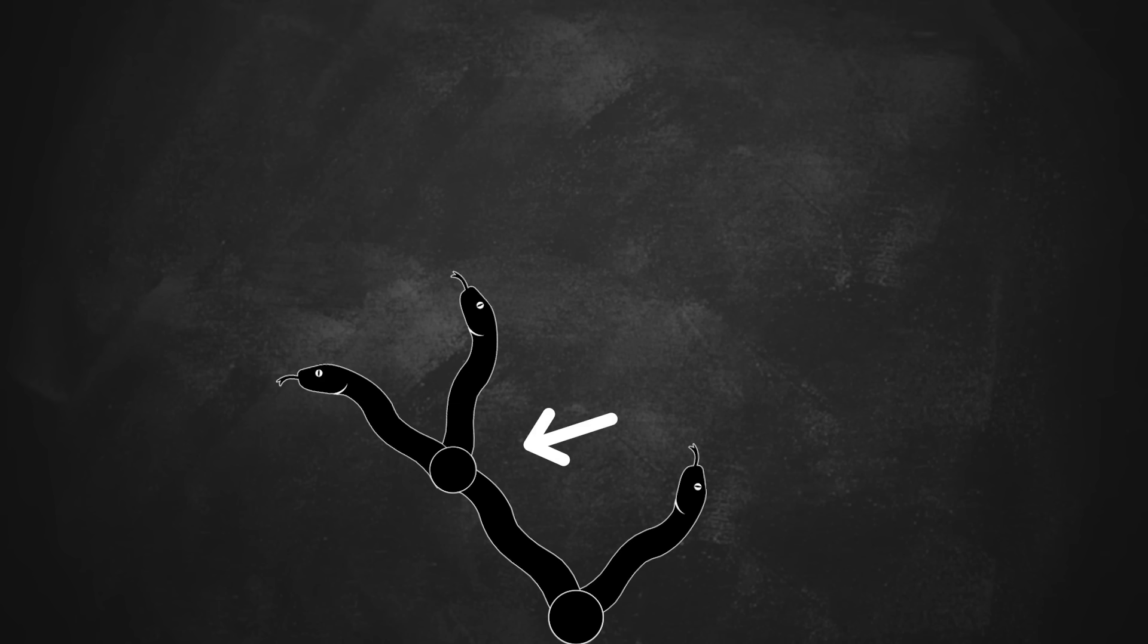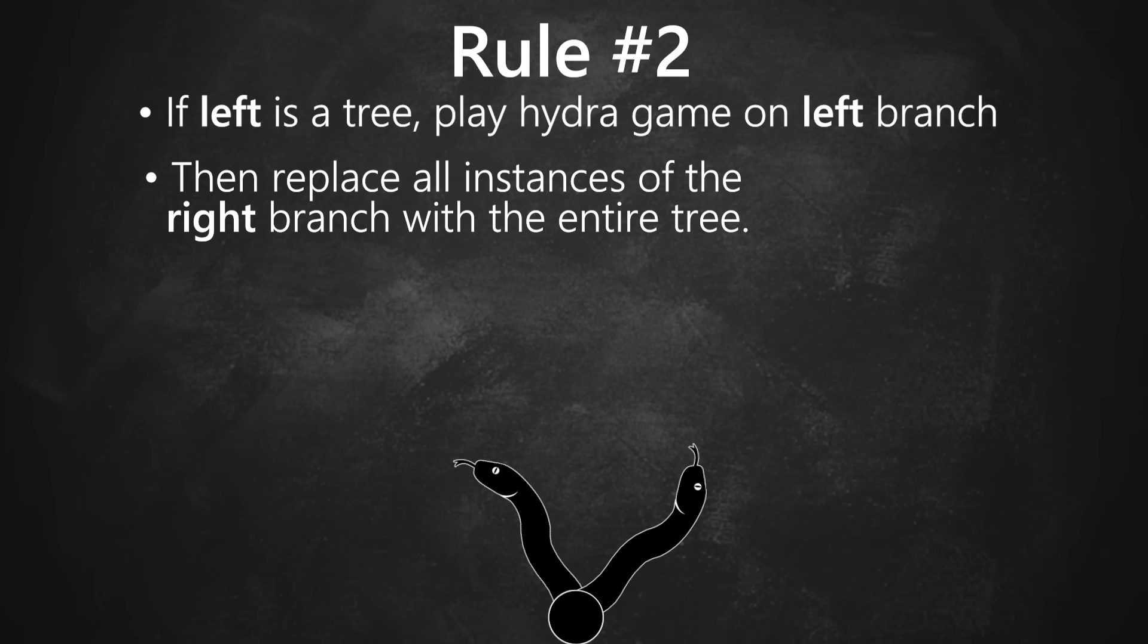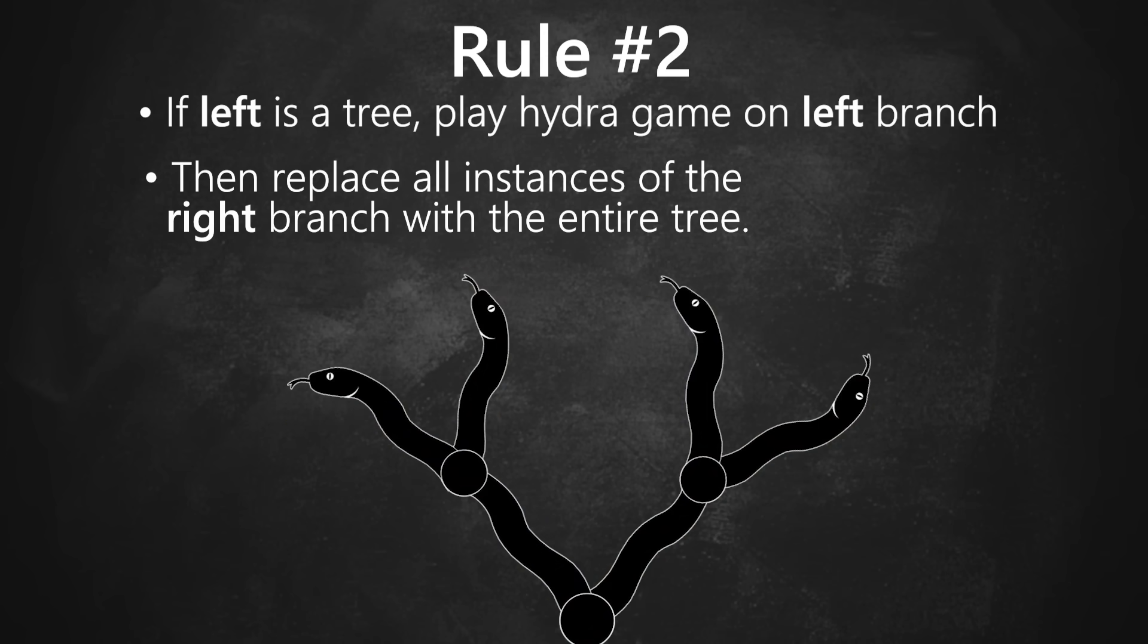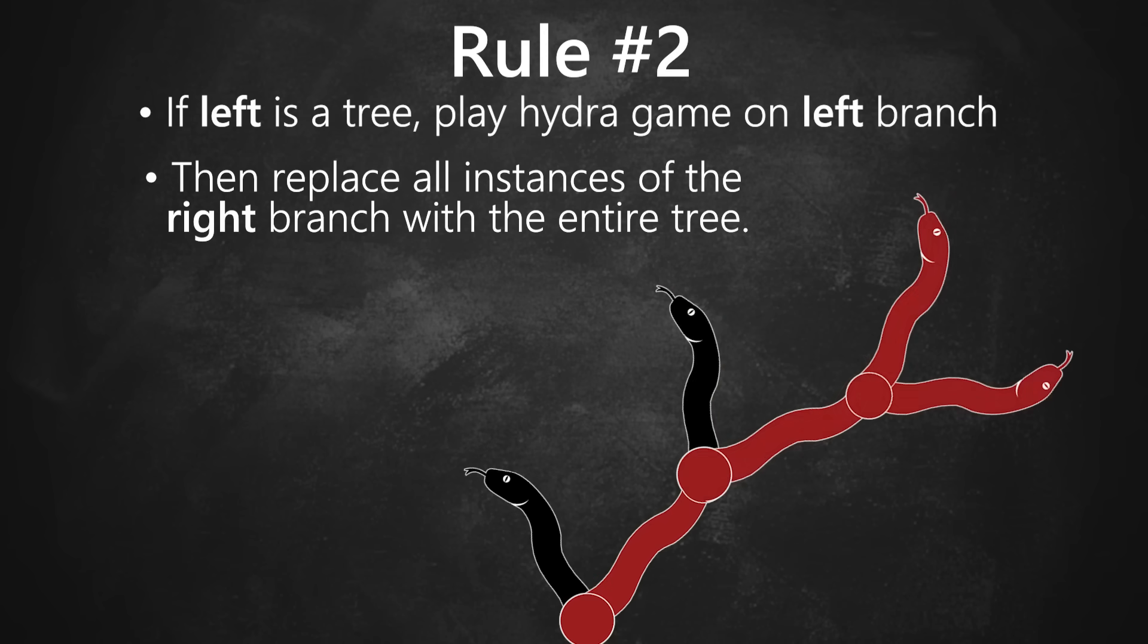But what about when the left branch is a tree? In this case, the second rule says we need to just recursively play the hydra game on the left node. And when we get the result, we search to find any instances of the right branch and replace them all with a copy of the entire tree. Now it might sound like this would create hydras that could grow forever. But surprisingly, any hydra like this can always be defeated in a finite number of steps.